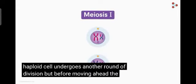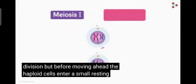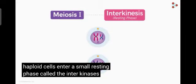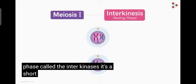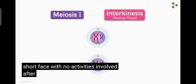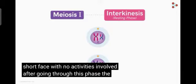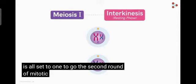But before moving ahead, the haploid cells enter a small resting phase called the interkinesis. It's a short phase with no activities involved. After going through this phase, the cell is all set to undergo the second round of meiotic division.